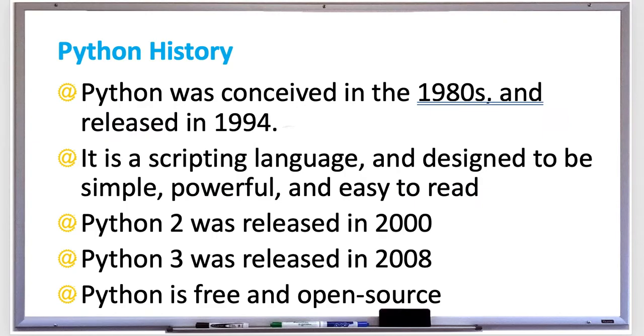In this video we're going to talk about the history of Python. As computer programming started to get popular and evolve in the 60s and 70s, programmers created scripting languages so they wouldn't have to compile code. Compiling code basically means taking code that a programmer wrote and converting it into machine code or code that the computer can understand.